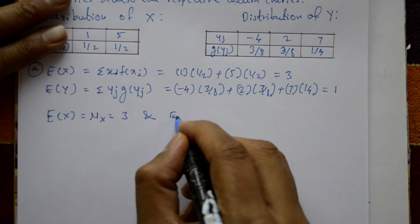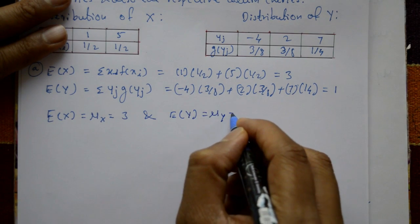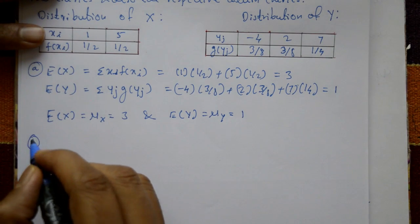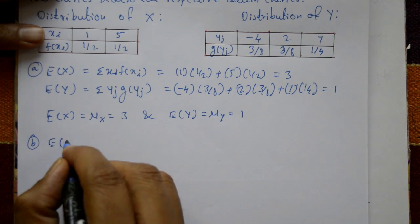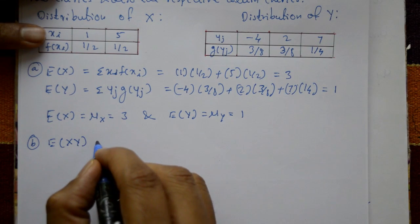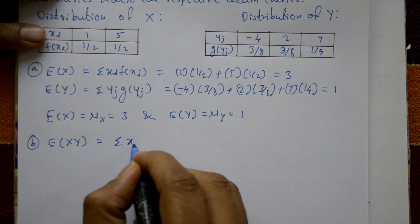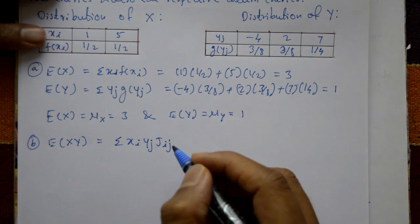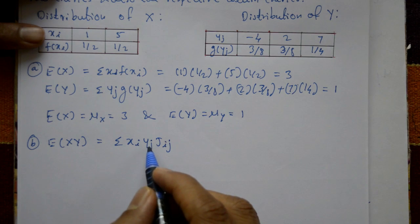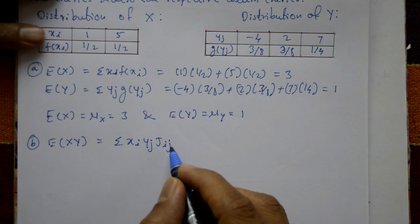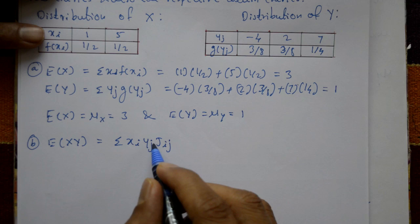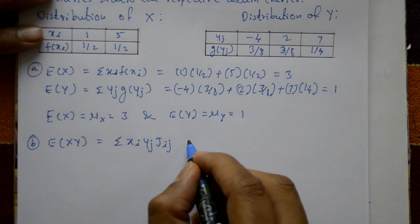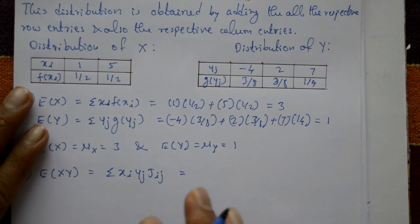Next, E(Y) = Σ yⱼ · g(yⱼ). E(Y) = (−4) × (3/8) + 2 × (3/8) + 7 × (1/4) = 1. So expectation of Y, or μᵧ, equals 1.